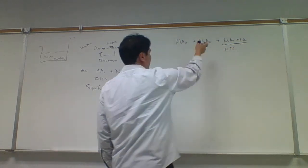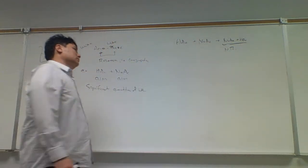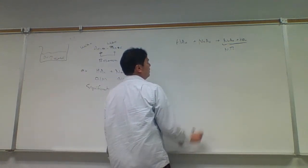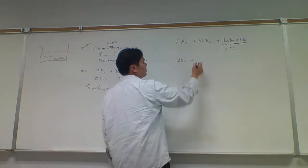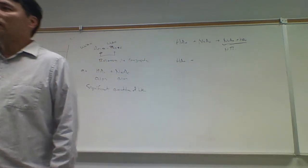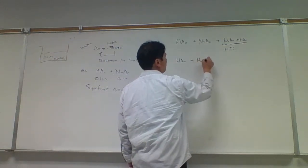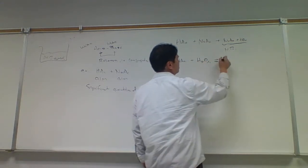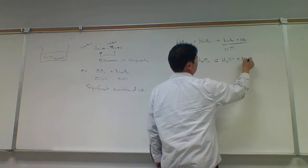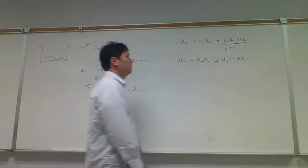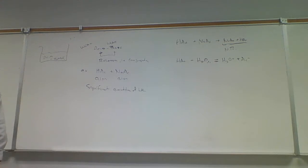We took this acid and reacted it with the strongest base present, and if nothing happens there, we end up in the same spot. Then we try to react it with the next strongest base. Sodium acetate is the strongest base, so the next strongest base is water. So we have H₂O liquid, and this is going to produce hydronium and acetate.